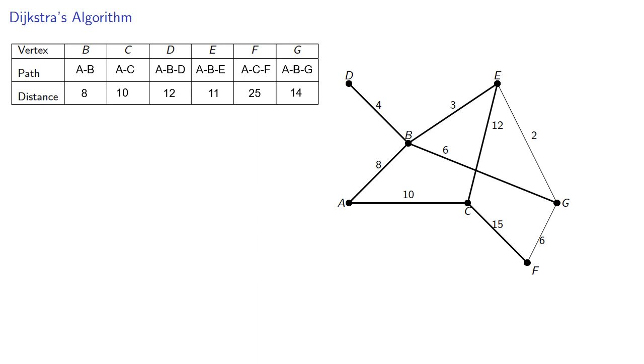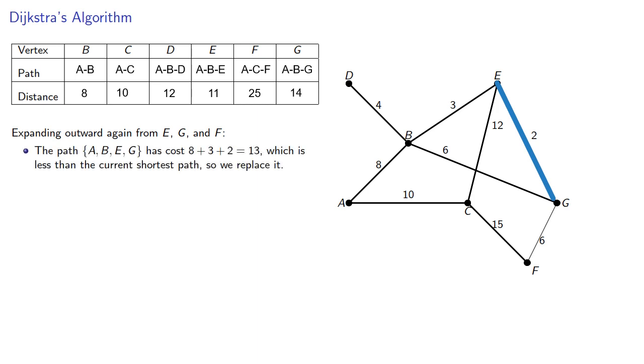Now our endpoints are at E, G, and F, so we'll expand outward from those points. So if we expand from E, the path A to B to E to G has cost 13, which is less than the current shortest path to G, so we replace it. The path A to B to G to F has cost 20, and again, this is less than the current shortest path to F, so we'll replace it.